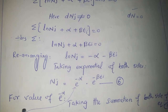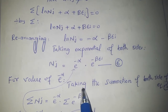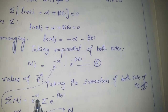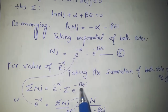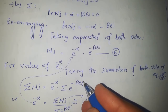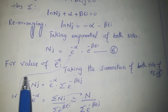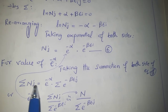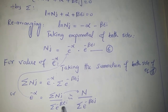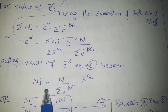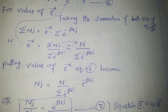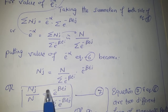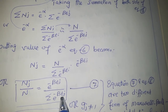To find the value of alpha, take the summation of both sides of equation 6. The exponential of alpha is a constant taken outside, and the variable part involves the energy εj of different jth levels. The summation of particles in different levels gives the total number of particles N. Rearranging gives the value of alpha. Substituting this alpha value back into equation 6 and rearranging — transferring terms to the denominator to get the population ratio — gives us equation 7, where the denominator is the summation over all levels.